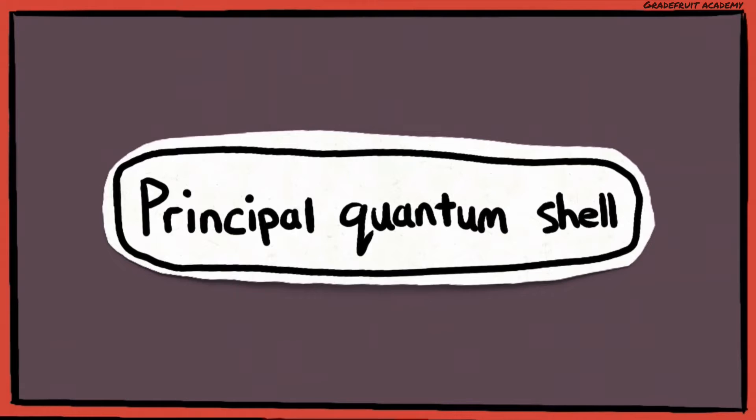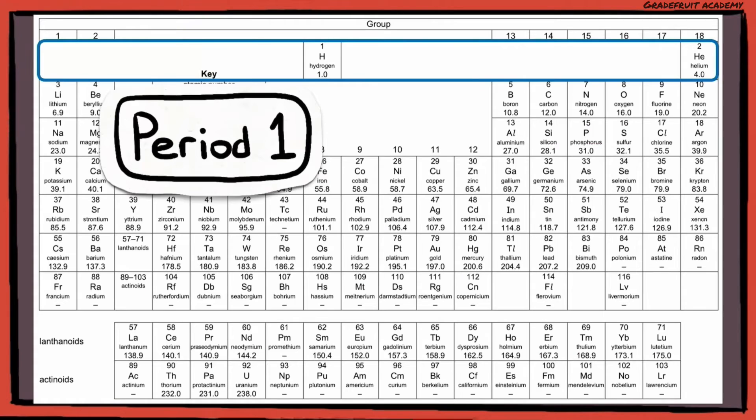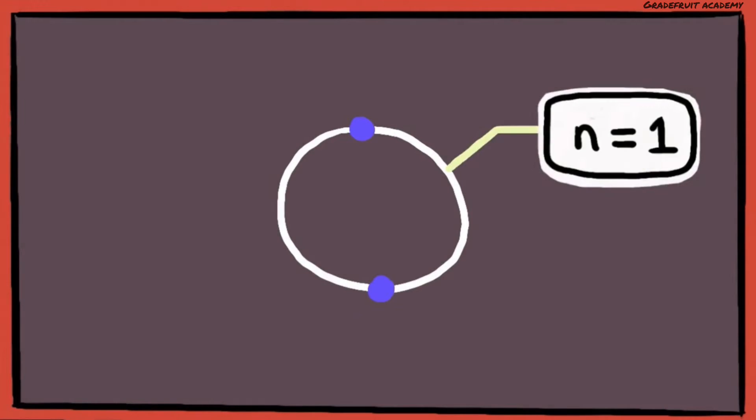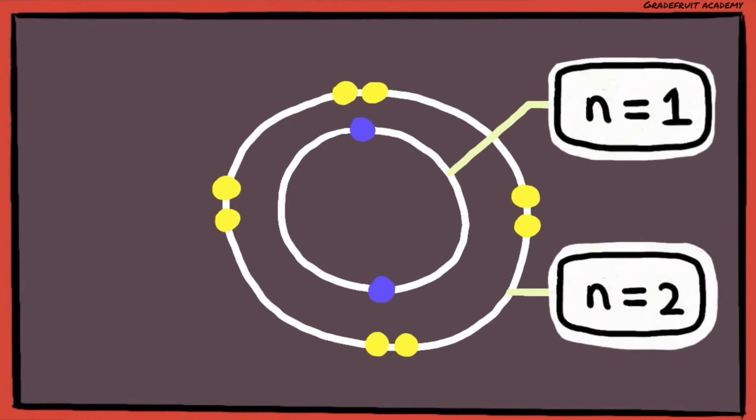Firstly, we have the principal quantum shell. The number of principal quantum shells depends on which period an element is in. So, if it's in period 1, it will have 1 shell, and we label it to be n equals to 1. And if it's in period 2, it will have 2 shells, and we label it to be n equals to 2, and so on.